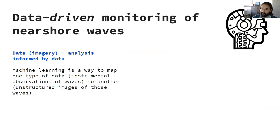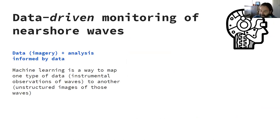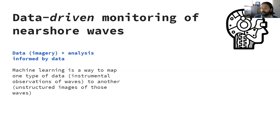Optical wave gauging is a data-driven approach where the analysis is informed by the data, not by the physics of the problem — and that is essentially what machine learning is. In our field, it's a way to circumvent the necessity of requiring a physical approach, which is of course necessary if you wish to gain fundamental understanding, but is not necessary if you simply want to monitor the phenomenon of interest. Machine learning is a way to map one type of data — in our case, instrumental observation of waves — to another type of data, unstructured or structured images of those waves.